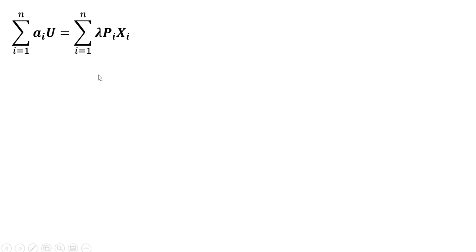Rewriting that last step and just moving some things around here. And one thing to note here is the sum of alpha i equals 1, and the sum of price of good i times units equals M.